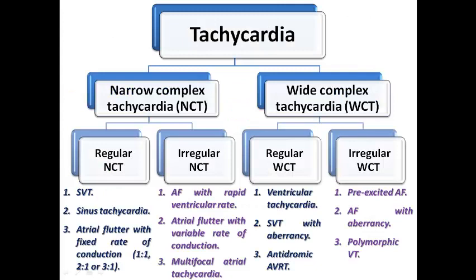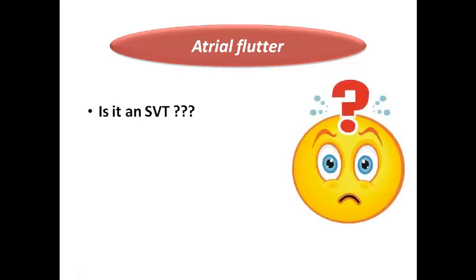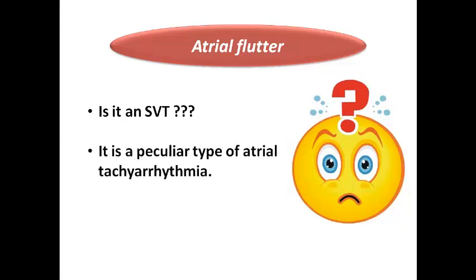Following our classification scheme for tachyarrhythmia, today we are focusing on atrial flutter, which can present as a regular narrow complex tachycardia in case of fixed rate of conduction, or an irregular form in case of variable rate of conduction. Atrial flutter is a peculiar type of atrial tachyarrhythmia and should be diagnosed separately from SVT because it has a specific type of management and specific response to the medications used to terminate SVT.